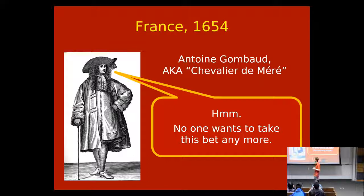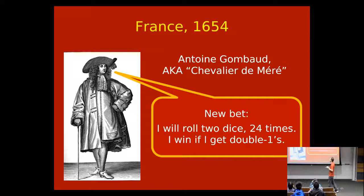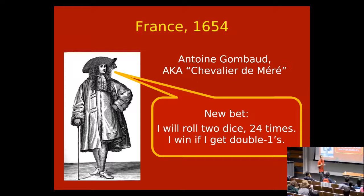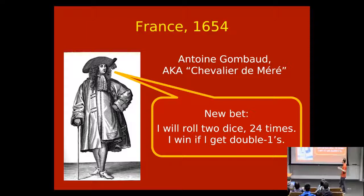He lost his source of income, so he stepped it up. He made a new bet where he'd roll two dice, and each time see if he got double ones — snake eyes. He'd do it 24 times and win if he got double ones once. His reasoning was: the probability of getting two ones when you roll two dice is one-sixth the probability of getting one one when you roll one die. So to make up for the four rolls before, he'd multiply by six and do it 24 times.